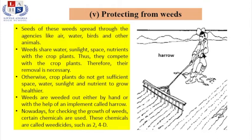We will also discuss why weeds are undesirable and how they are separated from healthy crops. For propagation, weeds use air, water, and animals as their medium. This is how they spread in fields and grow alongside healthy crops.